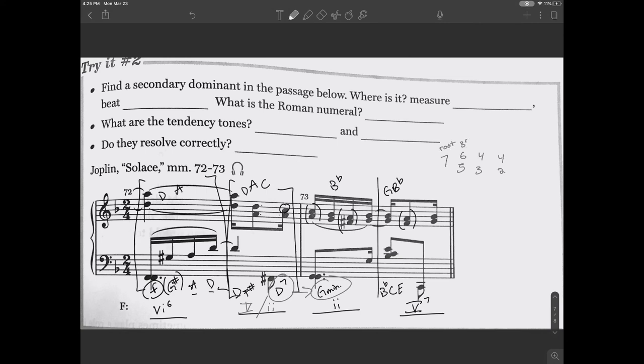And we have to make sure that we write this D7 chord in the correct inversion. Since F sharp, the third of the chord, is in the bottom voice, we're going to write 5, 6, 5. Now we can work on the questions. So the secondary dominant was in measure 72 in beat 2. And the Roman numeral, like we said, was 5, 6, 5 of 2.